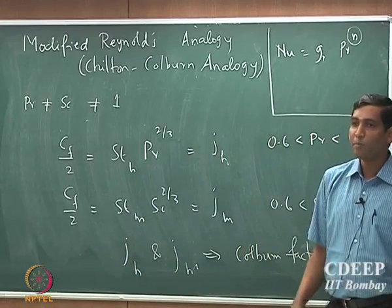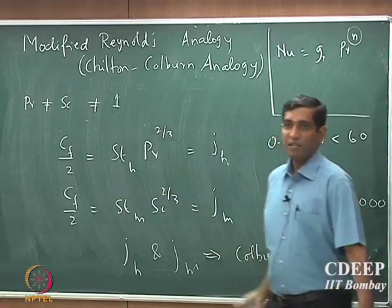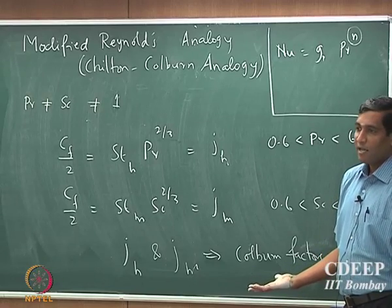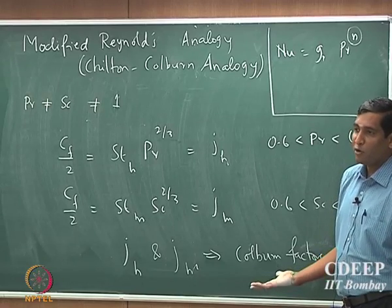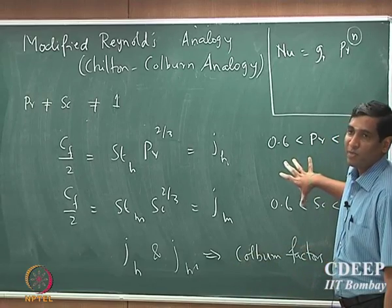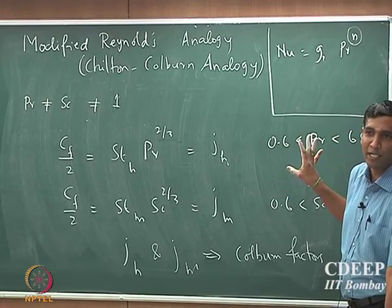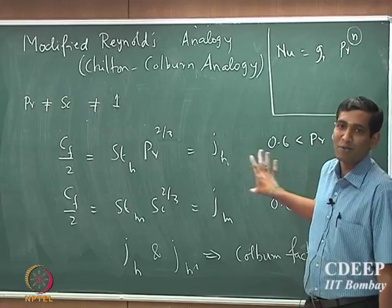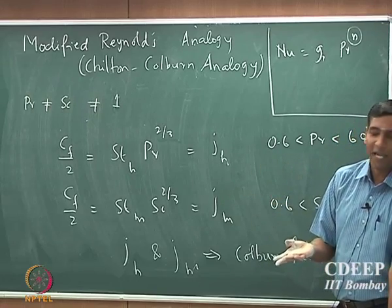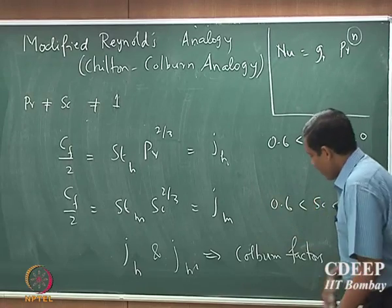These two quantities — one for heat and one for mass — are called the Colburn factors. If you know the friction coefficient, you should be able to estimate the Colburn factors, and once you know them, you are done. This is for a real system with a certain range of validity for Prandtl and Schmidt number, which encompasses most of the systems you would experience in practice.